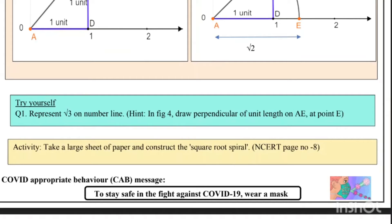So we can take an arc from here with the help of a compass. AE is equal to AC because this arc is the radius of a circle. Therefore AE = √2, so AE is under root 2. This is the irrational number √2 being represented on the number line.